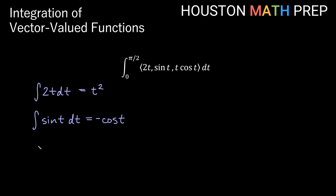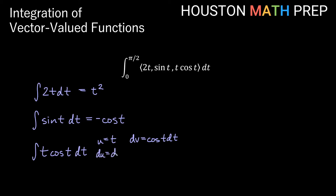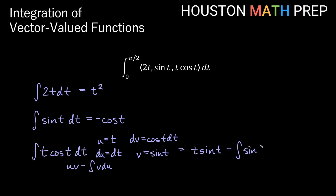For t cosine of t, this is a product, and since we can't do u substitution here, we'll use integration by parts. We choose u to be t, and dv to be cosine of t dt. Then du is dt, and v — the antiderivative of cosine t — is sine t. The integration by parts formula gives uv minus the integral of v du, so this becomes t sine of t minus the integral of sine t dt.